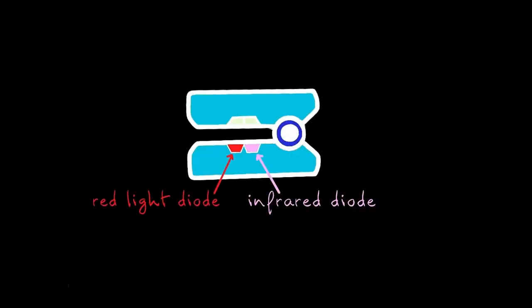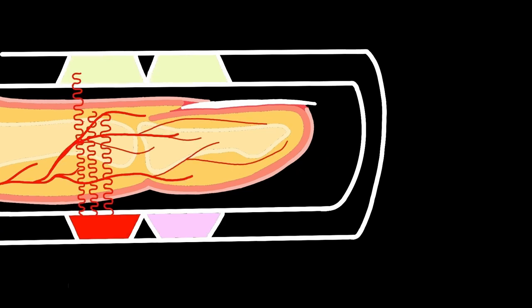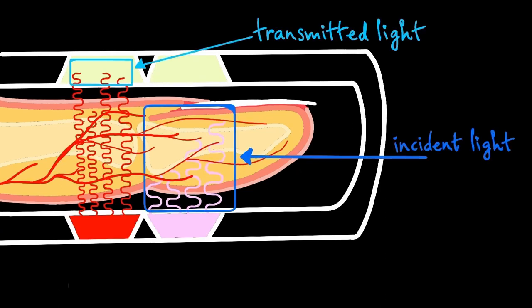In the pulse oximeter, two light-emitting diodes each send red and infrared light to a photodetector. When your finger is placed in the probe, tissue, bone, blood and its components absorb light waves called incident light. The remaining light, called the transmitted light, makes contact with the photodetector.